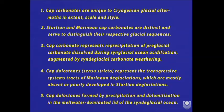Cap carbonates represent re-precipitation of preglacial carbonate dissolved during the Snowball ocean acidification, augmented by carbonate weathering during ice melting. Because initially sea level is low, those tropical carbonate platforms are exposed to acid rain. The cap dolomite transgressive tracts are poorly developed in the Sturtian, although the best one I've ever seen is at Arkarula in the Flinders Ranges, where we collected samples for carbon isotopes with permission from Doug and Mark Sprigg.